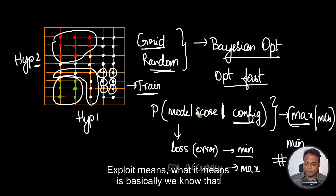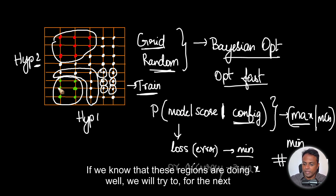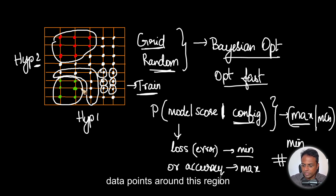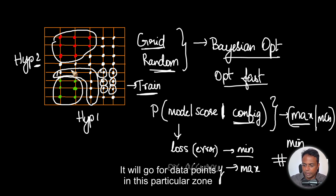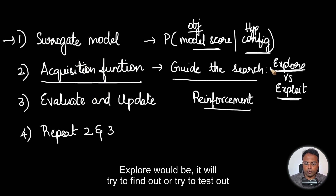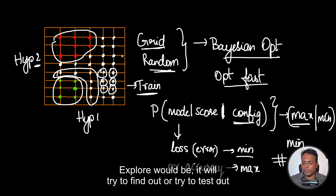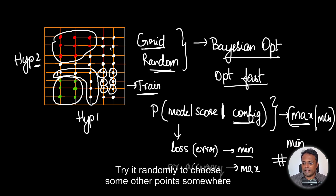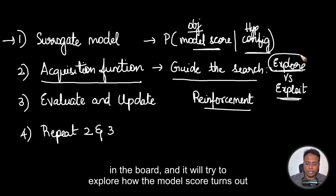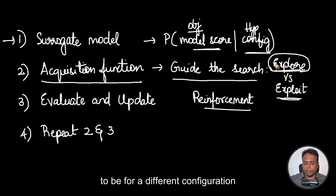Exploit means we know these regions are doing well, so for the next iteration when it goes for an exploit option, it will try to choose data points around this region — it will go for data points in this particular zone. Explore would be it will try to find out or test data points that are farther away. Randomly, it will choose some other point somewhere and try to explore how the model score turns out for a different configuration. That's what explore is.